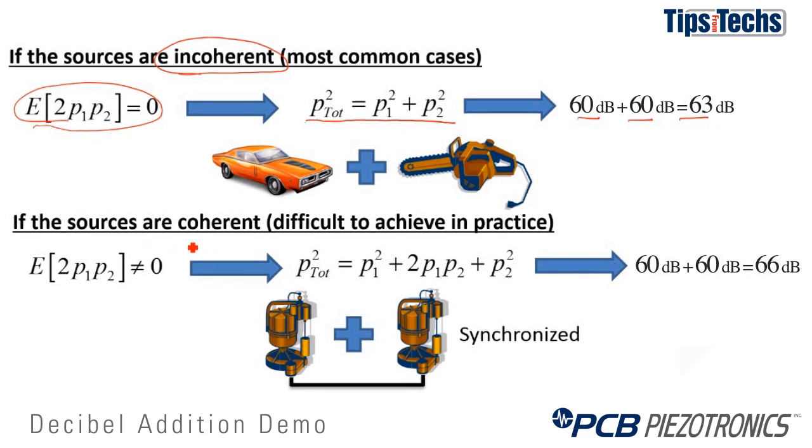In the rare case when you have a coherent system, we have two sources that do have a consistent phase relationship, like two pumps that are synchronized or timed together. Here the cross term will not equal zero. When we add two levels together, say 60 dB and 60 dB, we'll get a 6 dB increase per doubling of source, because the cross term is now present.